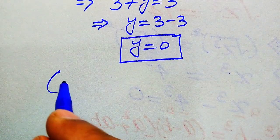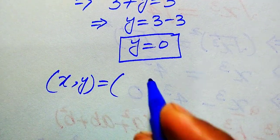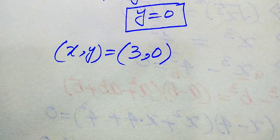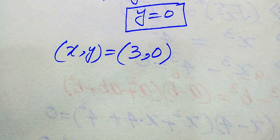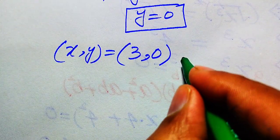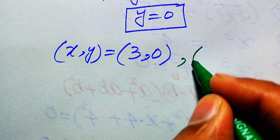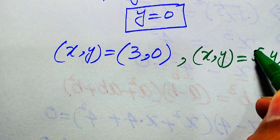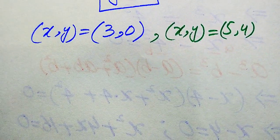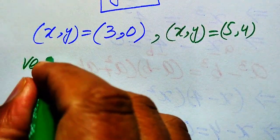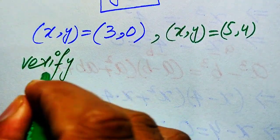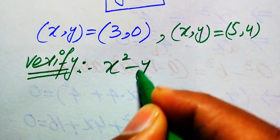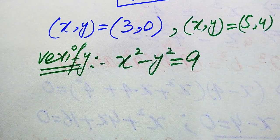So the second solution is (x, y) equals (3, 0). We now have two roots of the given equation: (3, 0) and (5, 4). We need to verify whether both roots are valid solutions or extraneous. Copying down the original equation: x squared minus y squared equals 9.